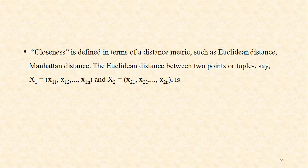The nearest neighbors are calculated by finding the closeness. Closeness is defined in terms of a distance metric, such as Euclidean distance or Manhattan distance. The Euclidean distance between two points or tuples, say x1 and x2, is represented as (x11, x12, ..., x1n) and (x21, x22, ..., x2n) respectively.